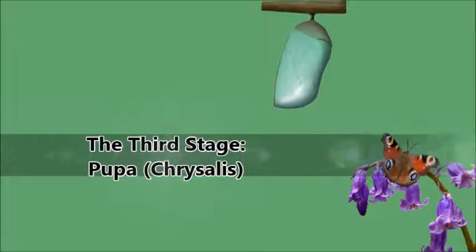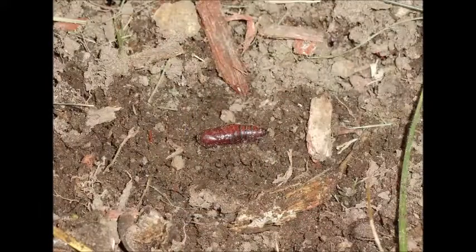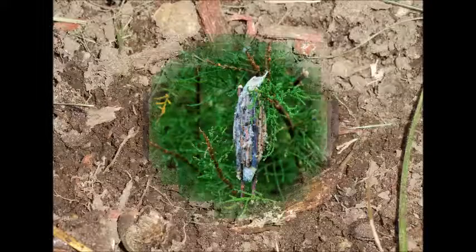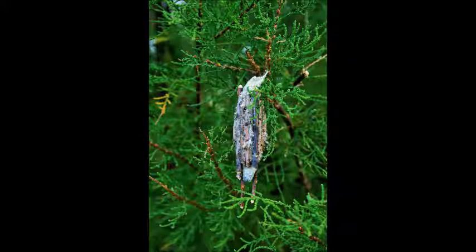The third stage: pupa, or chrysalis. When the caterpillar is full grown and stops eating, it becomes a pupa. The pupa of butterflies is also called a chrysalis. It does not eat during this stage. The chrysalis of most species is brown or green and blends into the background. It is usually suspended under a branch, hidden in leaves, or buried underground. The pupa of many moths is protected inside a cocoon of silk. Inside the pupa, the caterpillar is rapidly changing — most of its organs and other body parts dissolve and re-form into the organs, tissues, limbs, and wings of the adult.